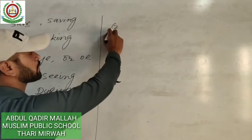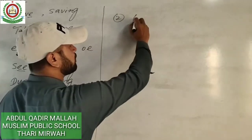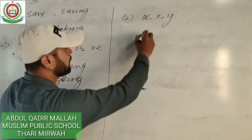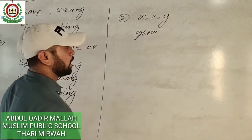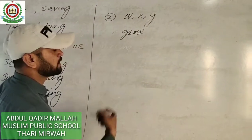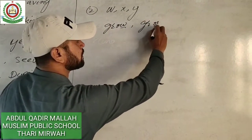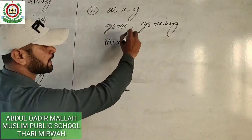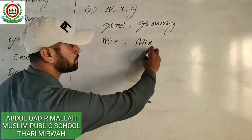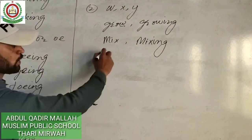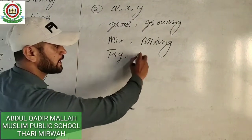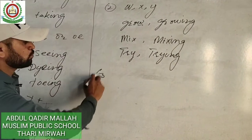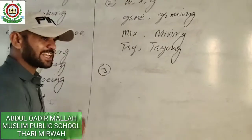Rule number two: if a word ends with W, X, or Y, we directly add -ing. For example, 'grow' ends with W, so we directly add -ing — it becomes 'growing.' The word 'mix' ends with X — we directly add -ing — it becomes 'mixing.' The word 'try' ends with Y — we directly add -ing — it becomes 'trying.'